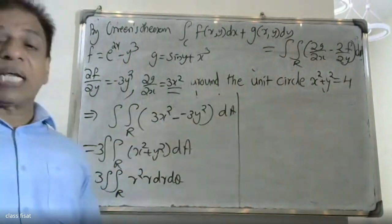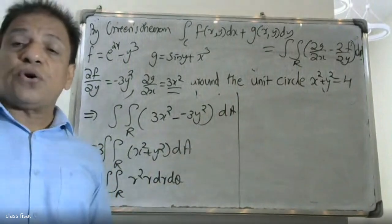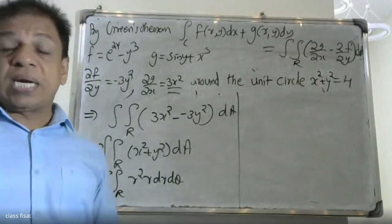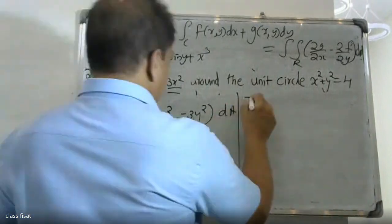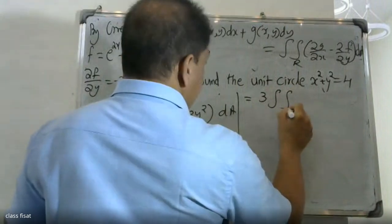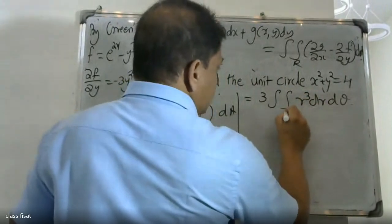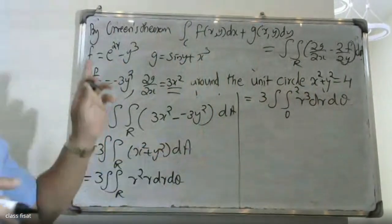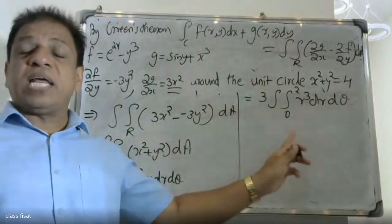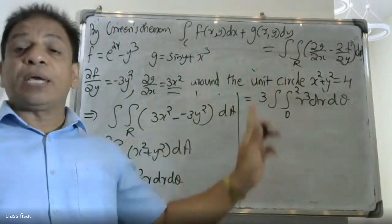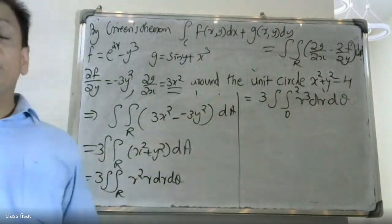The region is the circle x² plus y² equals 4, centered at the origin with radius 2. So r varies from 0 to 2 and θ varies accordingly. The integral becomes 3 times the double integral of r³ dr dθ.